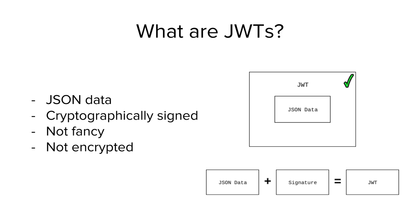The first thing we need to talk about is what the heck JSON Web Tokens actually are. You're going to see the acronym JWT a lot — it's just the short form, also pronounced JWT, and I'm going to use those terms interchangeably. Basically, JSON Web Tokens are really just some JSON data that's cryptographically signed. And that's it.